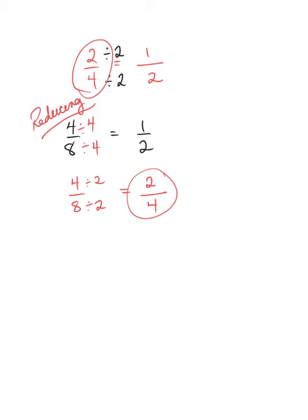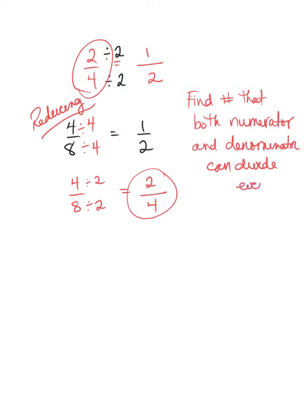So when it comes to putting fractions in their simplest form or reducing them, we can do it mathematically like this. Finding, so what we do is we find a number that both the numerator, which is the top number, and the denominator, which is the bottom number, can divide by evenly. So let's go back to our fraction. If we look at that mathematically,